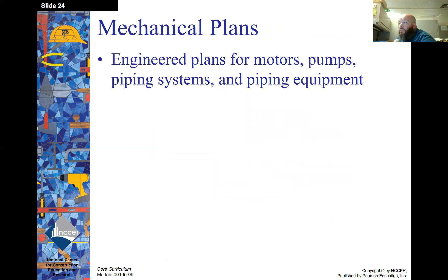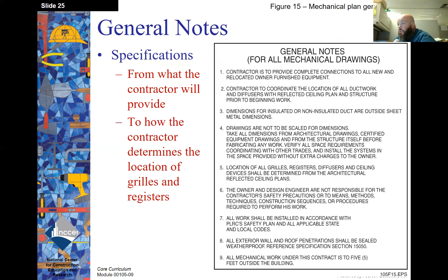Mechanical plans. These are engineered plans for motors, pumps, piping systems, and piping equipment. General notes or specifications from what the contractor will provide to how the contractor determines the location of grills and registers. Grills and registers, those are your discharges for your heating and air conditioning.